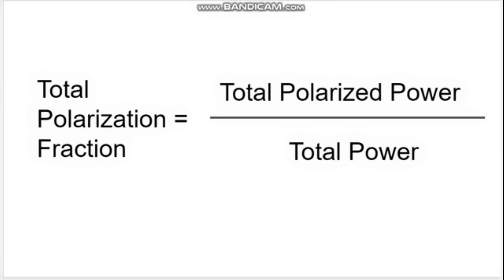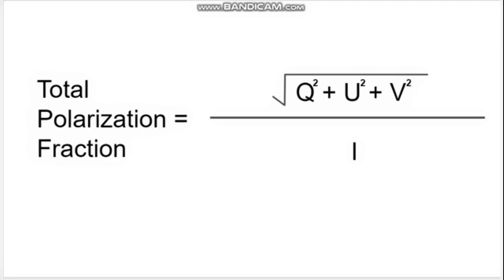Additionally, you can also identify the total polarization fraction of your incoming light. For that, you want to take the total polarized power and divide it by the total power incident. We know the total power is i, and to get the total polarized power, you square q, u, and v and take the square root of that. From there, you can determine whether you do in fact have polarized light.